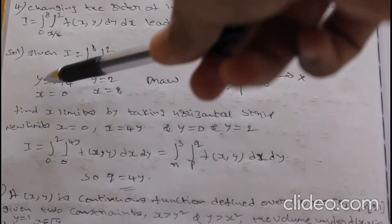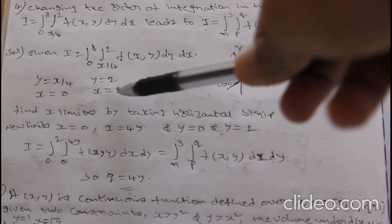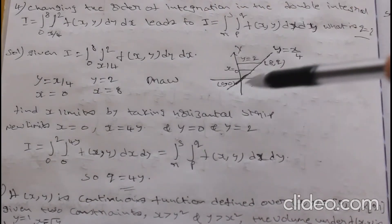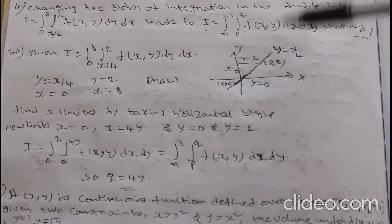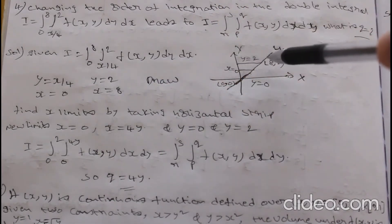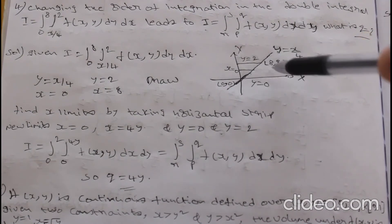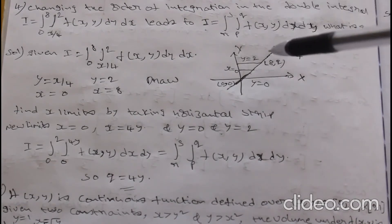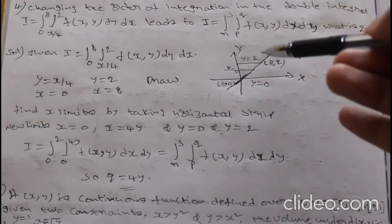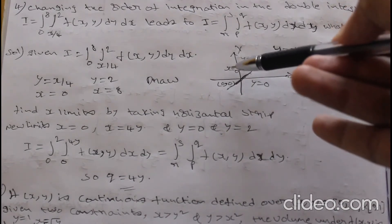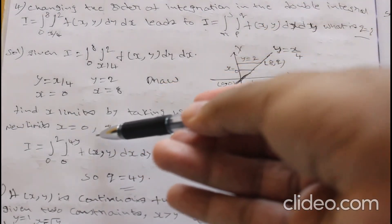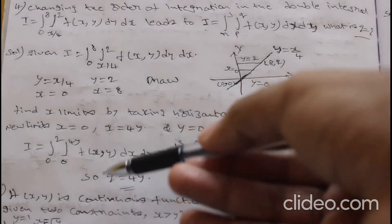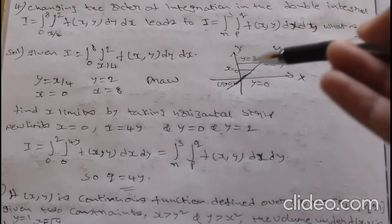Draw the x-y coordinates and draw the line y = x/4. The line y = 2 is a horizontal line and the point (8, 2) lies on it. To find dx dy limits, take the horizontal strip. For this strip, x ranges from x = 0 to the line x = 4y (rearranging y = x/4).